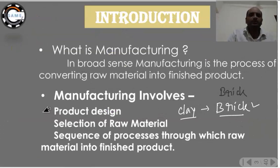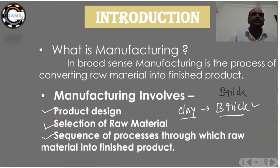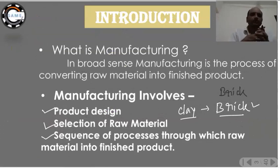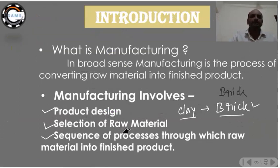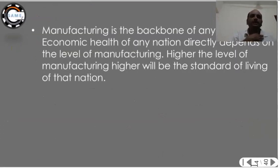The three steps involved in manufacturing are: first, product design; second, selection of raw material; and third, the sequence of processes through which raw material is converted into finished product. For example, when designing a car, you must also select which material to use — low cost, more efficient — before beginning production.